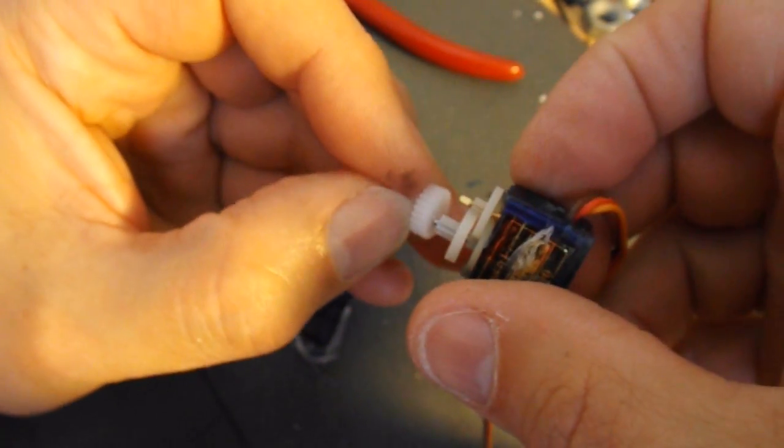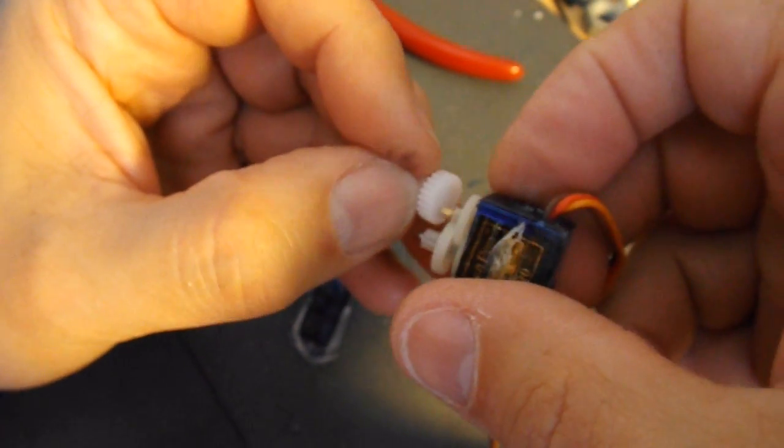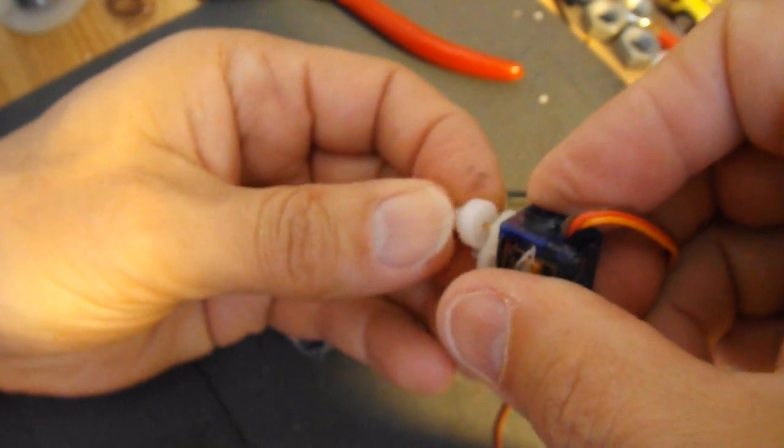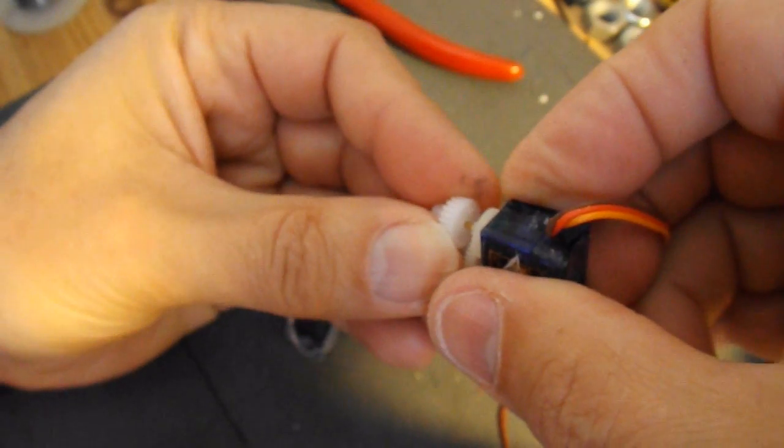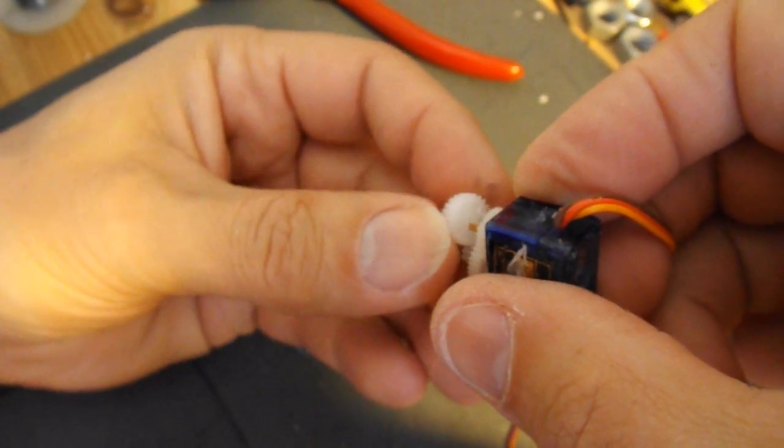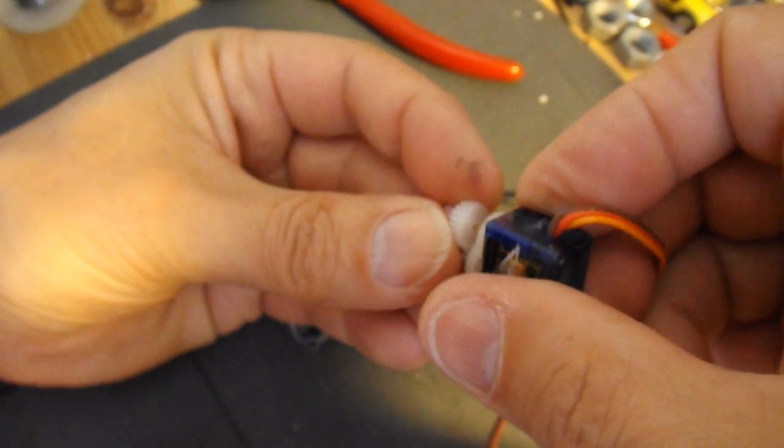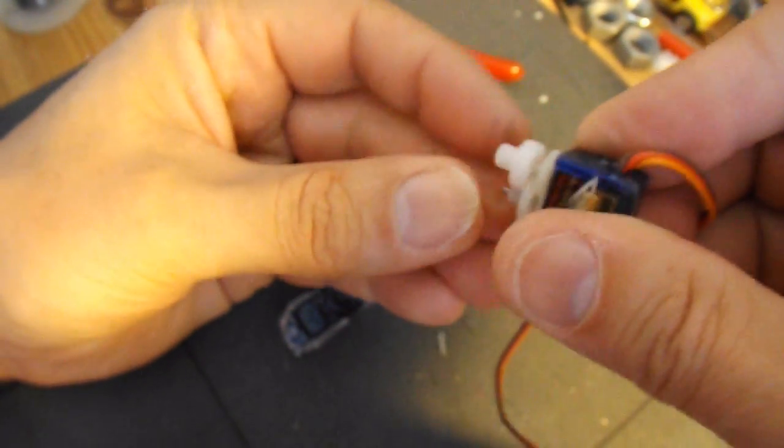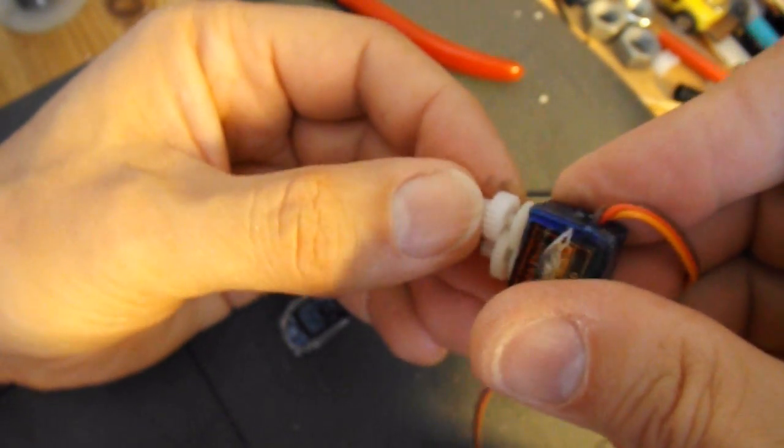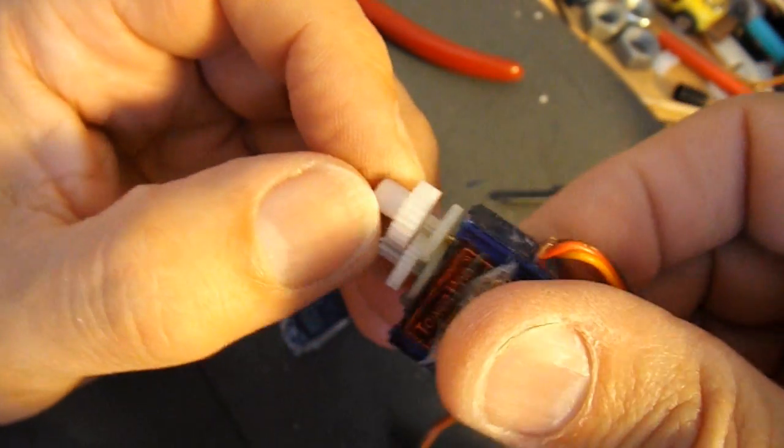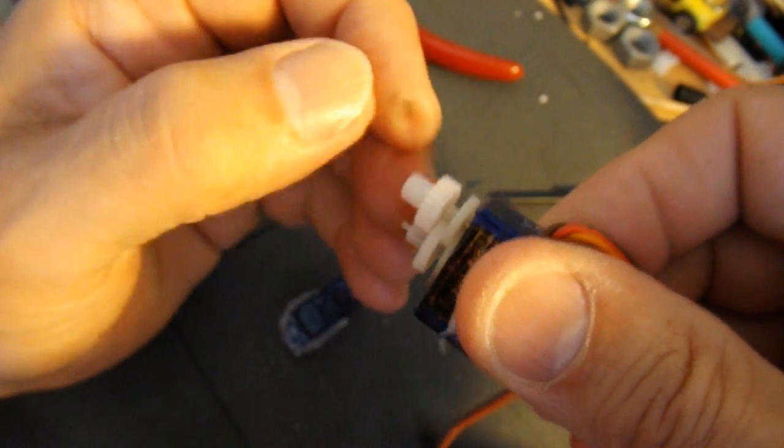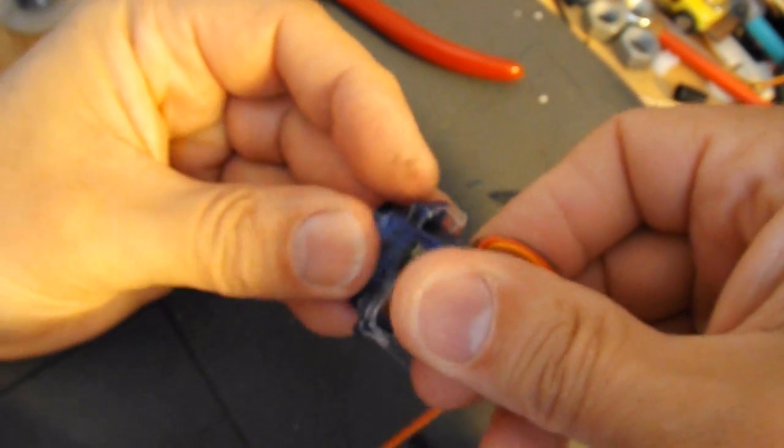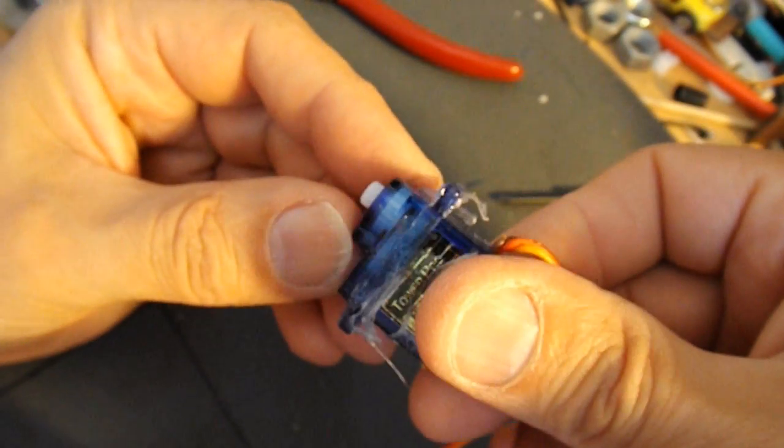So we can just put that straight back on. That's actually got a keyway on it this one. There we go. So that's now free to do the full 360 degree rotation. So that's that bit done.